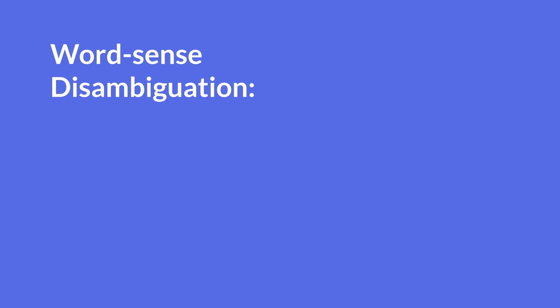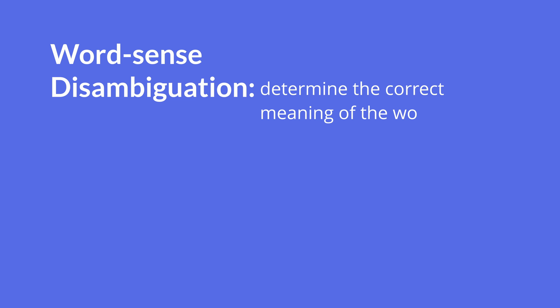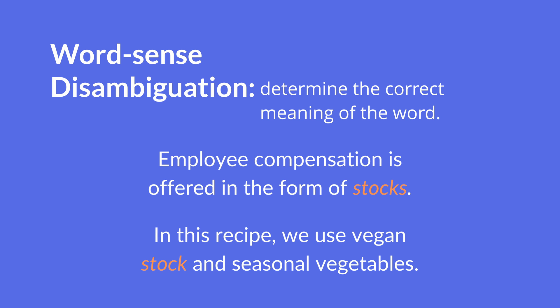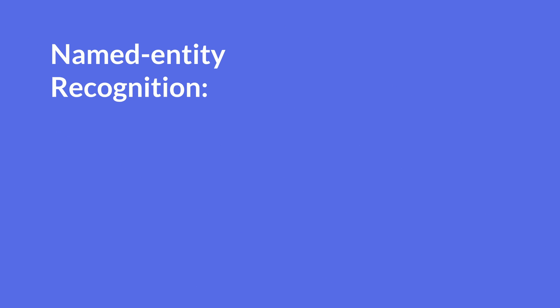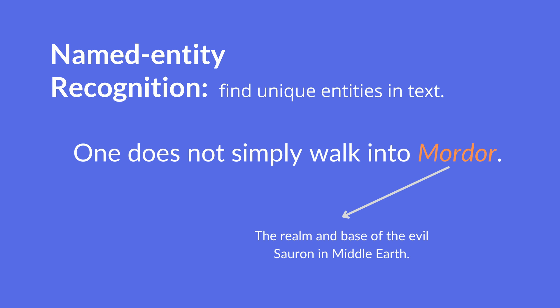Word sense disambiguation helps us understand in what meaning a word is used in a sentence, using the context of the sentence. Named entity recognition helps us understand a unique entity that is mentioned in a given sentence or text. On top of these relatively simpler tasks, we also have more complex sub-goals of NLP.